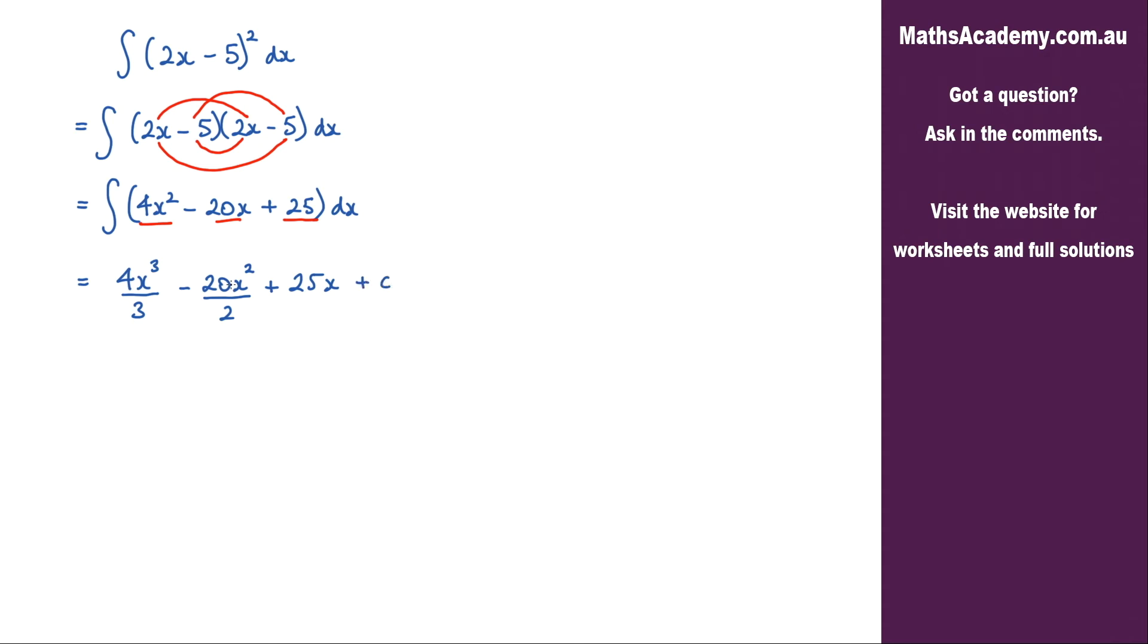Now looking at this second term here we can cancel the 20 and the 2. That'll leave me with 10. So the final answer is 4x cubed over 3 minus 10x squared plus 25x plus the constant of integration.